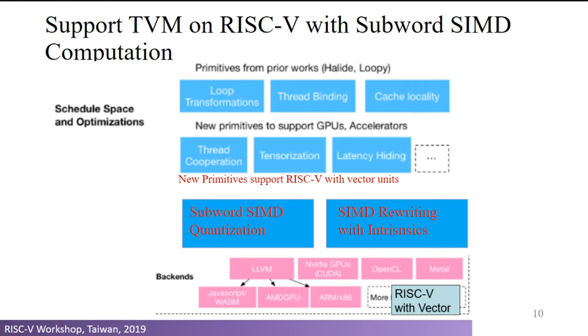We know that P extension SIMD instructions can improve AI program performance. We also think that we can combine the benefits from TVM with the benefits from SIMD instructions together, achieving more improved performance on AI programs. To accomplish this, we need to modify some parts of TVM — mostly in the second layer of optimization where we add two primitives — and also modify the code generation part to implement SIMD intrinsics.